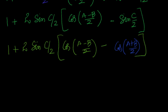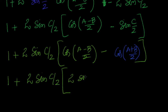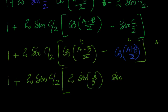This becomes 1 plus 2 sin(c/2) into cos((a-b)/2) minus cos((a+b)/2). Now this is of the form cos D minus cos C, so 1 plus 2 sin(c/2) into 2 sin((C+D)/2) sin((C-D)/2). Here (C+D)/2 is (a-b+a+b)/2 = 2a/2, that is sin(a/2). Similarly, (C-D)/2 gives (a+b - a+b)/4 = 2b/4, that is sin(b/2).